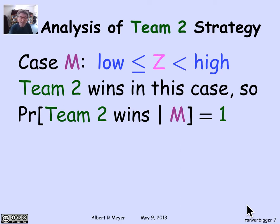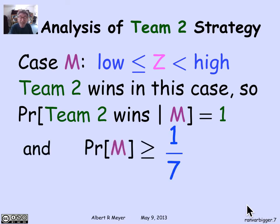How often does the middle case happen? The difference between low and high is at least 1, so there is guaranteed to be at least one chance in 7 that your z falls between them. It could be more if low and high are further apart, but as long as they're at least one apart, there's at least a 1/7 chance that z falls in between them.